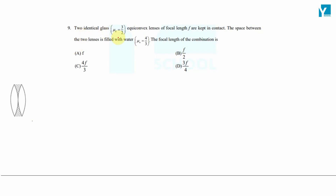Two identical glass lenses having refractive index 3/2 are equiconvex lenses of focal length f and are in contact. The space between the two lenses is filled with water, where the refractive index of water is 4/3. The question asks for the focal length of the combination.